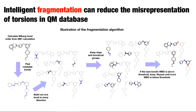Once you find the rotatable bonds, you build around them — keeping rings and certain functional groups. Then you check the Wiberg bond order on the bonds that are going to be fragmented. If it's above a certain threshold — which I'm still optimizing — you keep that bond and continue doing this recursively until you can fragment the molecule.